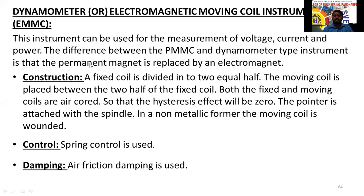This instrument can be used for measurement of voltage, current, and power — all three electrical parameters can be measured. The difference between PMMC and the dynamometer type instrument is that the permanent magnet is replaced by an electromagnet. PMMC stands for permanent magnet moving coil.